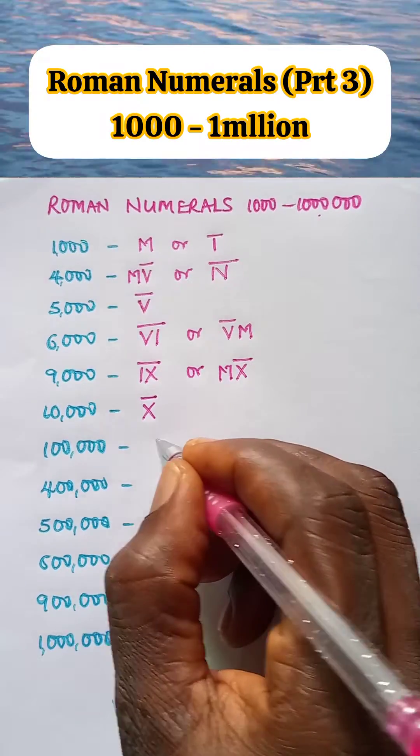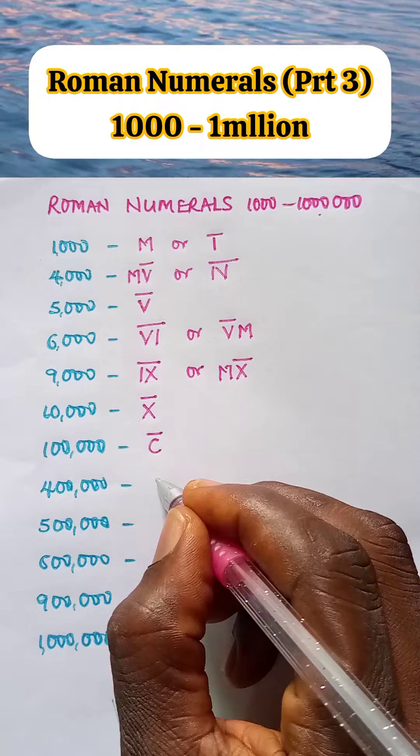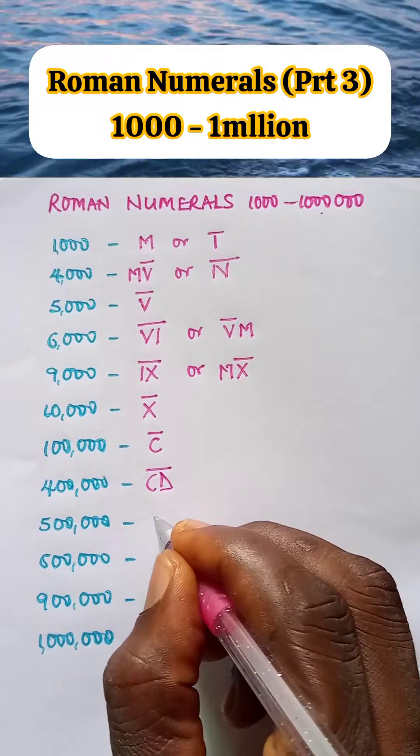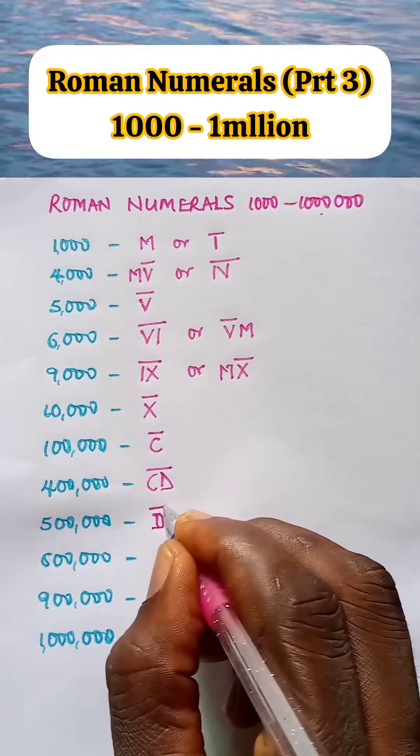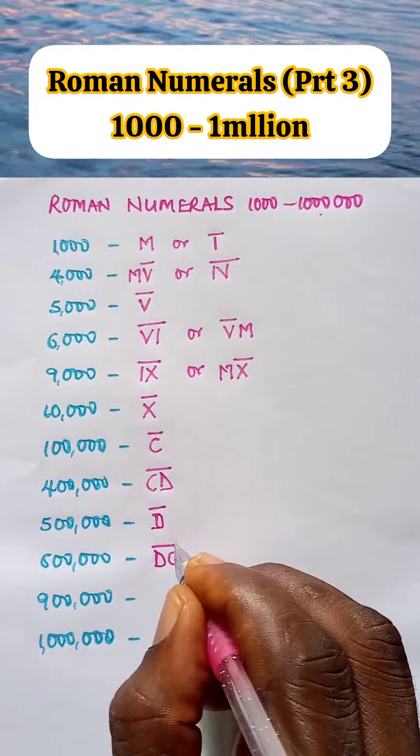One hundred thousand is C bar. Four hundred thousand is CD bar. Five hundred thousand is D bar. Six hundred thousand is DC bar. Nine hundred thousand...